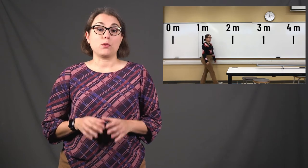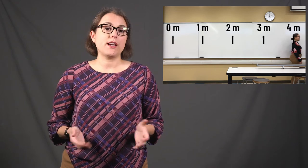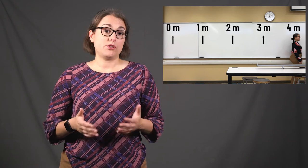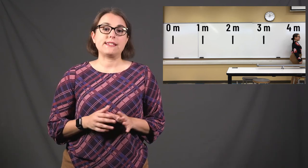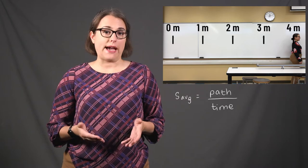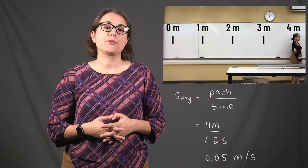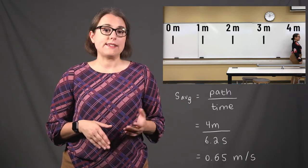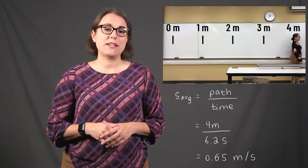Let's reconsider the example where I walked at a mostly constant pace from one end of the classroom to the other. Because speed is scalar, it relates to path, which is also scalar. My path was 4 meters and it took me 6.2 seconds to walk that distance. Therefore, my average speed equals path divided by time, which is 0.65 meters per second. Because I walked at a constant speed, my instantaneous speed at any moment during my walk would also be equal to 0.65 meters per second.